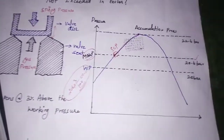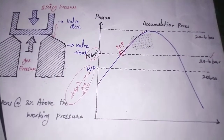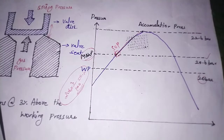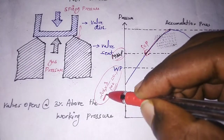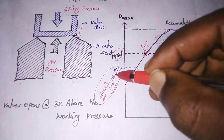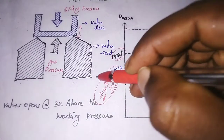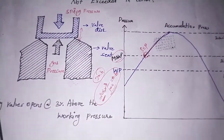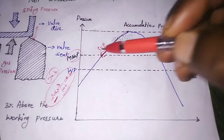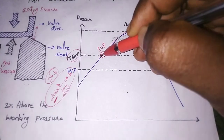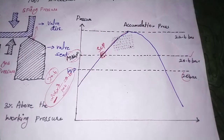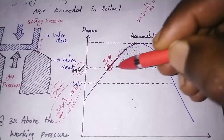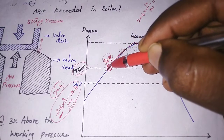Let's consider one boiler whose working pressure is 20 bar. The safety valve is set at 3 percent above the working pressure. Three percent of 20 bar is 0.6 bar, so the safety valve opens at 20.6 bar. This point — 20.6 bar — is called the maximum allowable working pressure (MAWP).